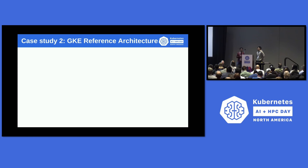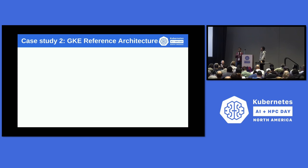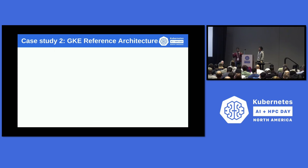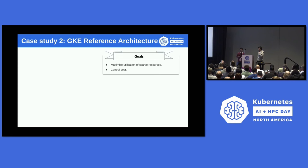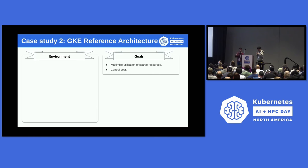Next I want to show a different case study. This case is not a particular customer — as you know, GKE is a cloud provider. We've talked with different customers on how they are using or planning to use Kueue, and we've come up with a few common architectures in which they can serve their users, building this reference architecture. The goal is, again, to have scarce resources and maximize utilization while also controlling cost. In this environment we have multiple research teams, each with different priorities and sizes.